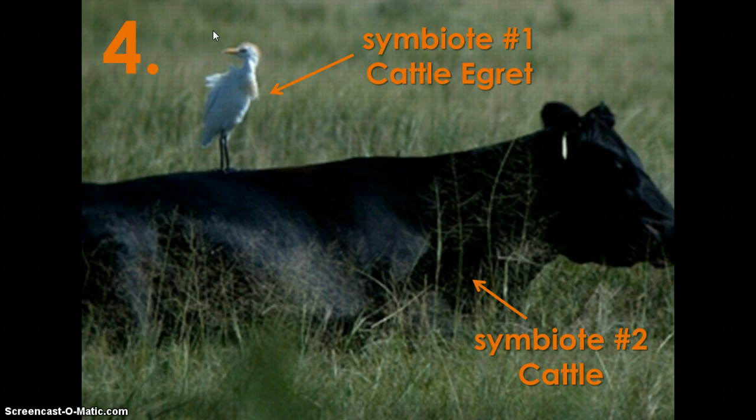In relationship number four, symbiote number one is the cattle egret and symbiote number two is the cattle. In this relationship, the cattle egret is benefiting because it has a protected spot on the back of the cattle.